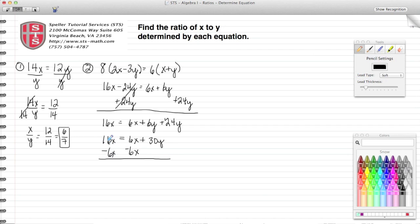In doing that, 16x minus 6x gives me 10x. This 6x positive and 6x negative, they cancel each other out, they go to 0, and that leaves me with 30y on the right-hand side.